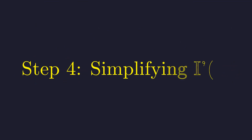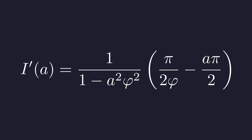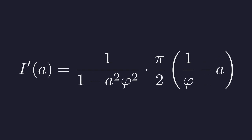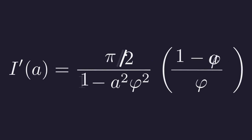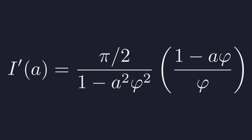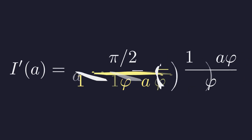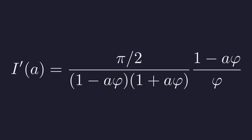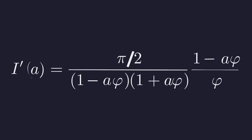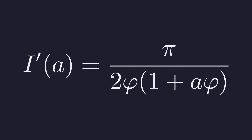Now we combine these results and simplify, substituting our two results back into the expression for I prime of A. We factor out pi over 2, then find a common denominator inside the parentheses. The denominator is a difference of squares, which factors into 1 minus A phi times 1 plus A phi. This reveals a common factor of 1 minus A phi, which cancels out perfectly. After all that work, I prime of A simplifies to a beautiful, clean expression.